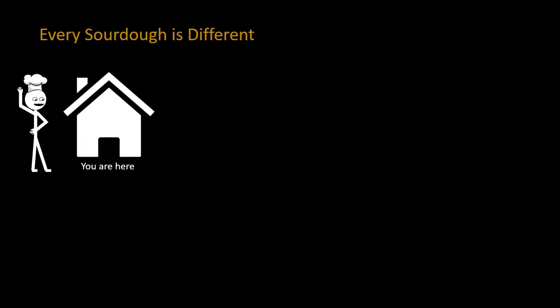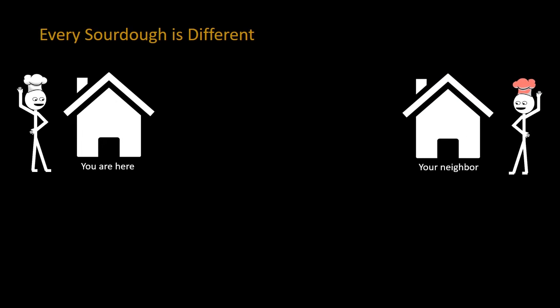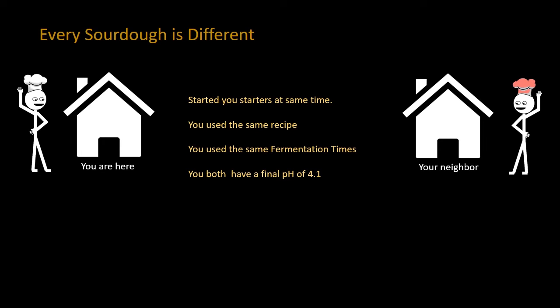With respect to acid development in your dough, remember — every sourdough is different. Let's say you decided to do a day of baking and contacted your neighbor, who's doing the same thing. You both shared recipes, started your starters around the same time, used the same recipe, very similar processes, and the same fermentation times. You call your neighbor and say: 'I just checked my dough after the bulk fermentation — it came out at 4.1.' He says, 'Mine also came out at 4.1.' Fantastic — same procedures, same recipes, both came out at 4.1.